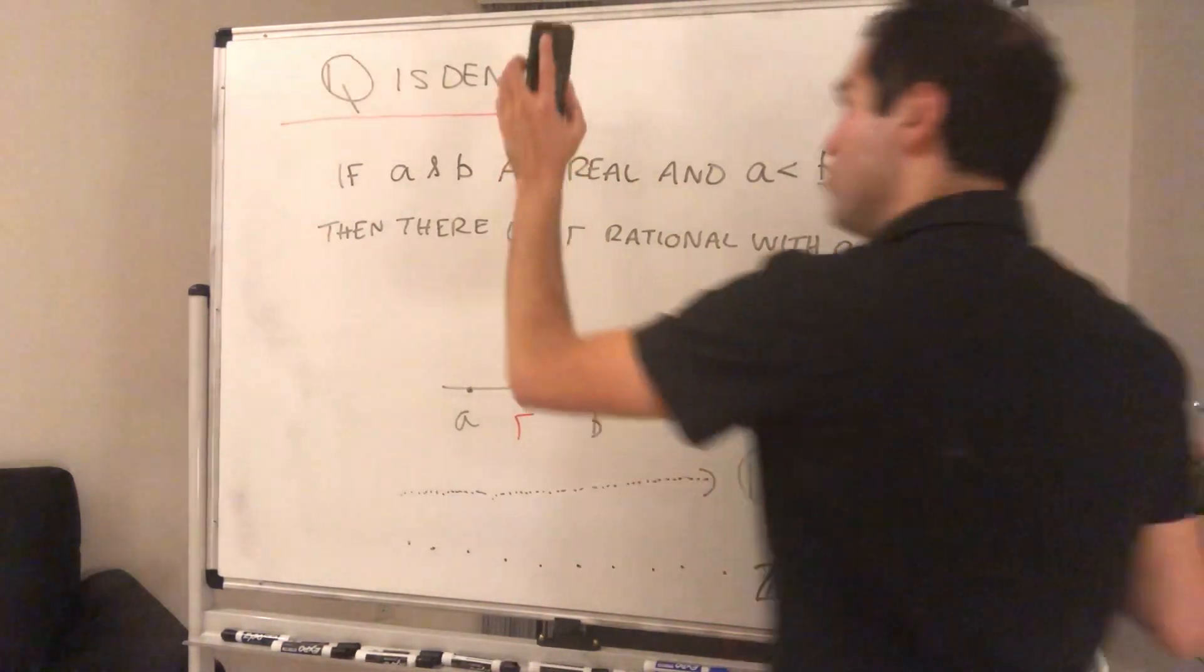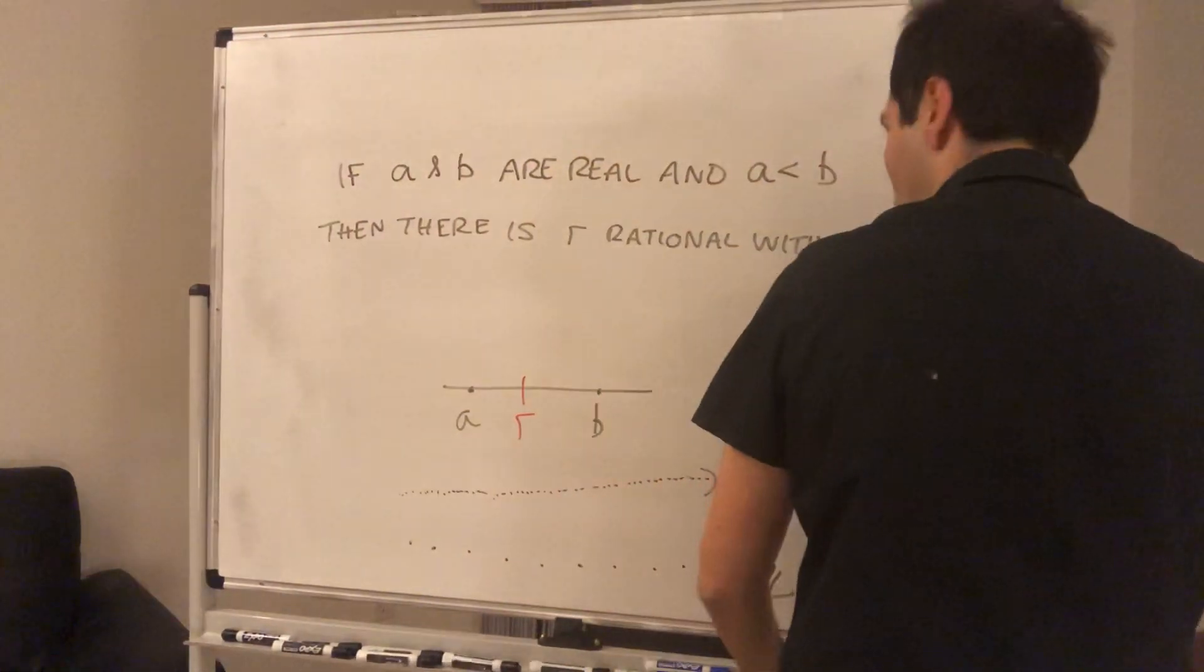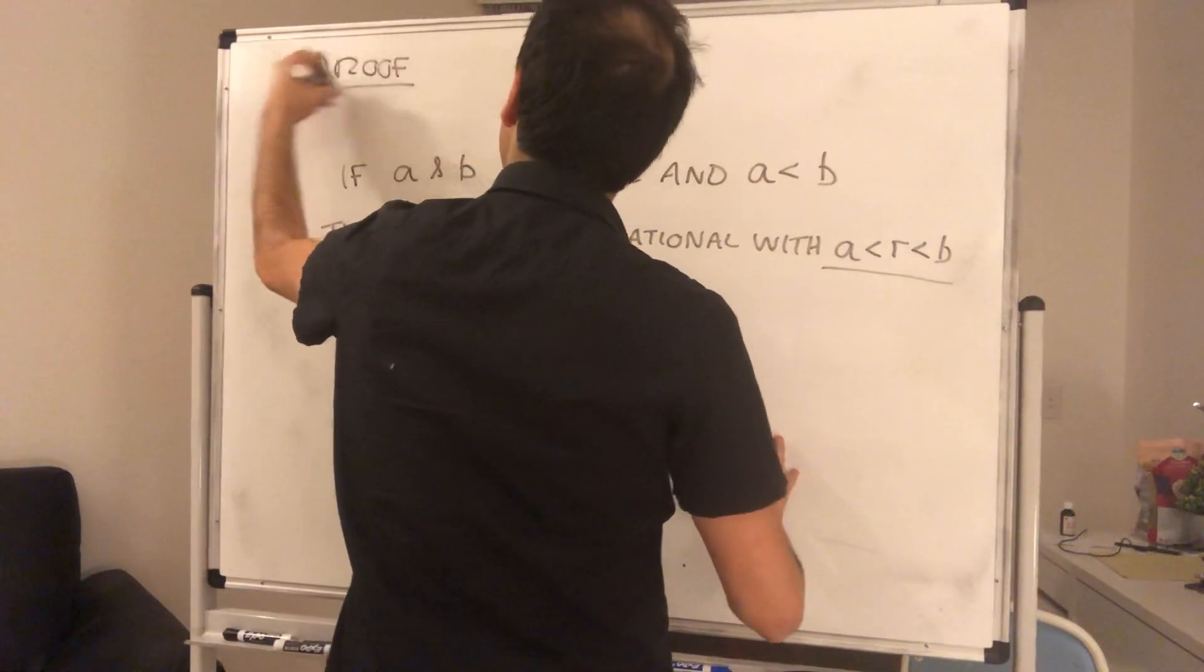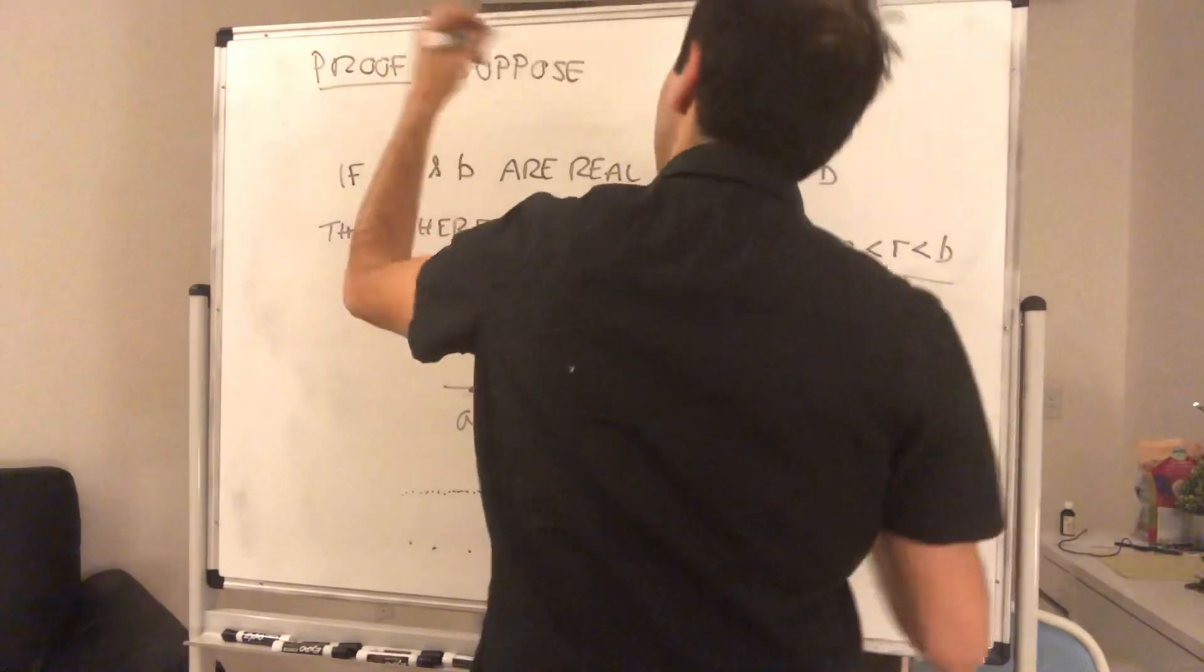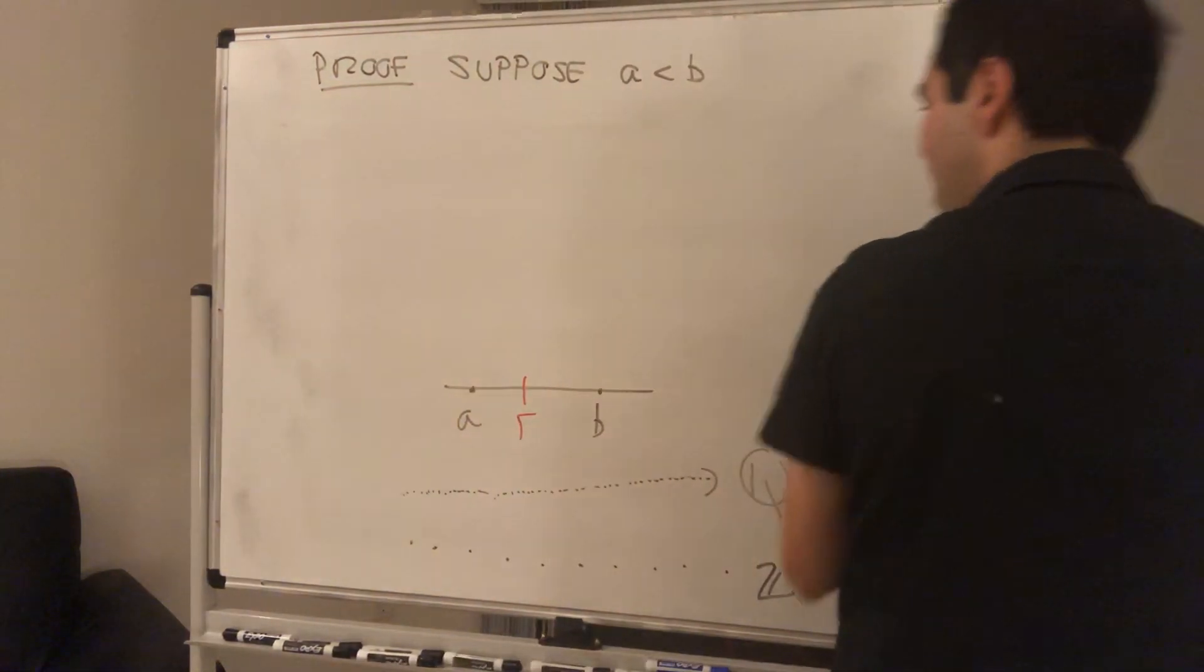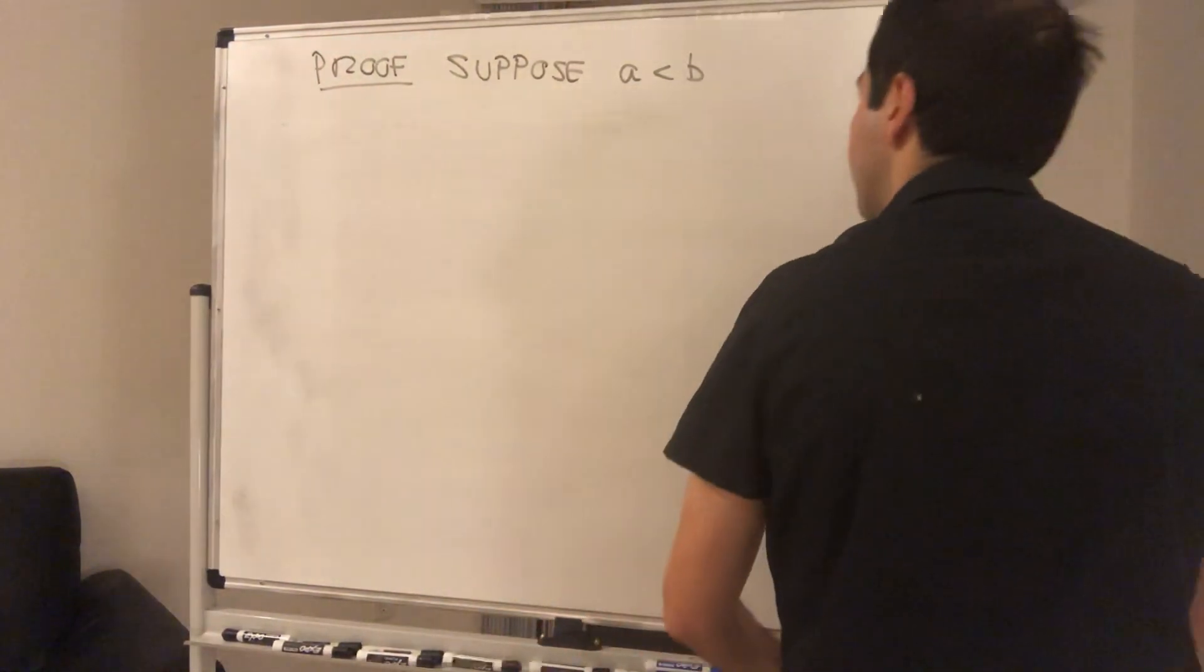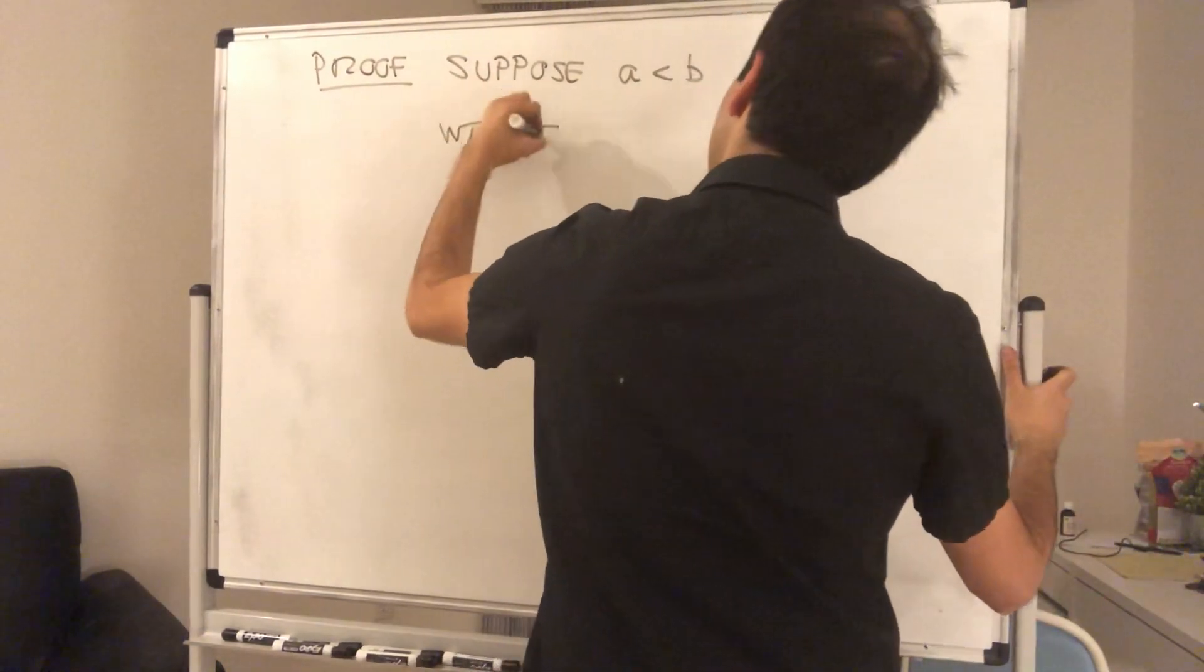And now let me prove this because it's a nice exercise in the least upper bound property. So here's a proof. Again, suppose a and b are real numbers with a less than b.